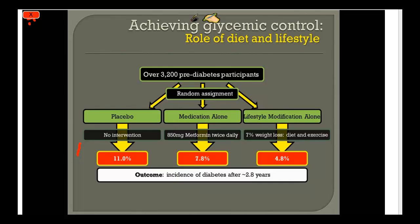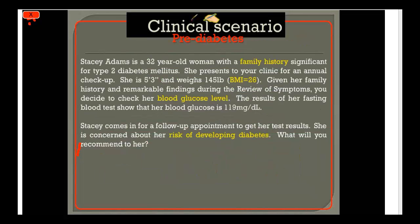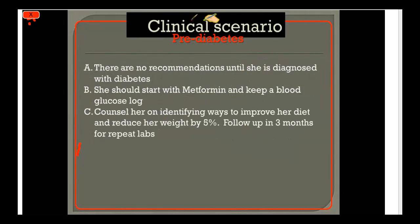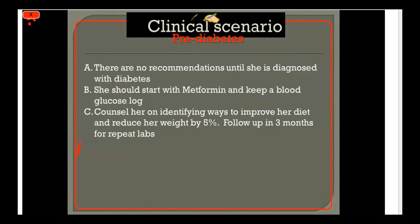Back to Stacey — she fits into the pre-diabetes category with a fasting blood glucose of 119 and is looking for recommendations. The answer is to counsel her on identifying ways to improve her diet and reduce her weight by about 5%, which is a reasonable starting goal. Follow up in 3 months and repeat labs.